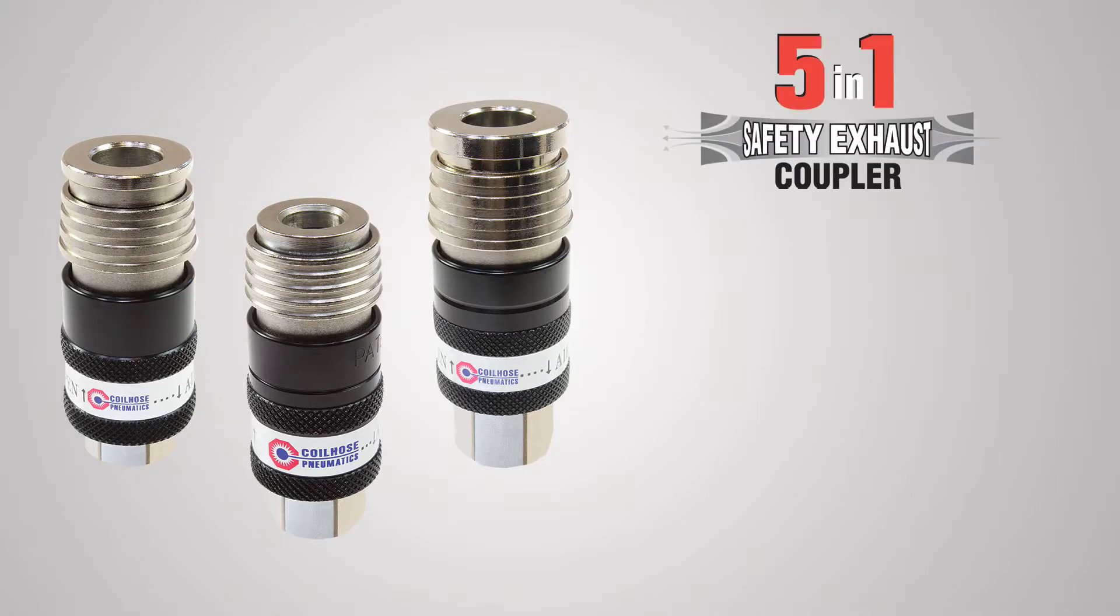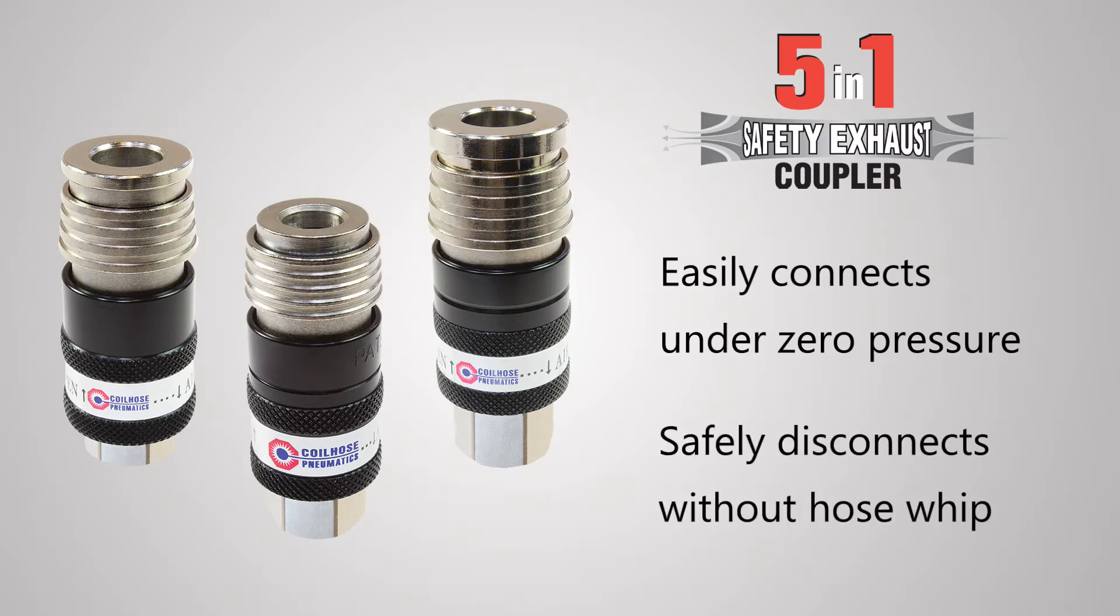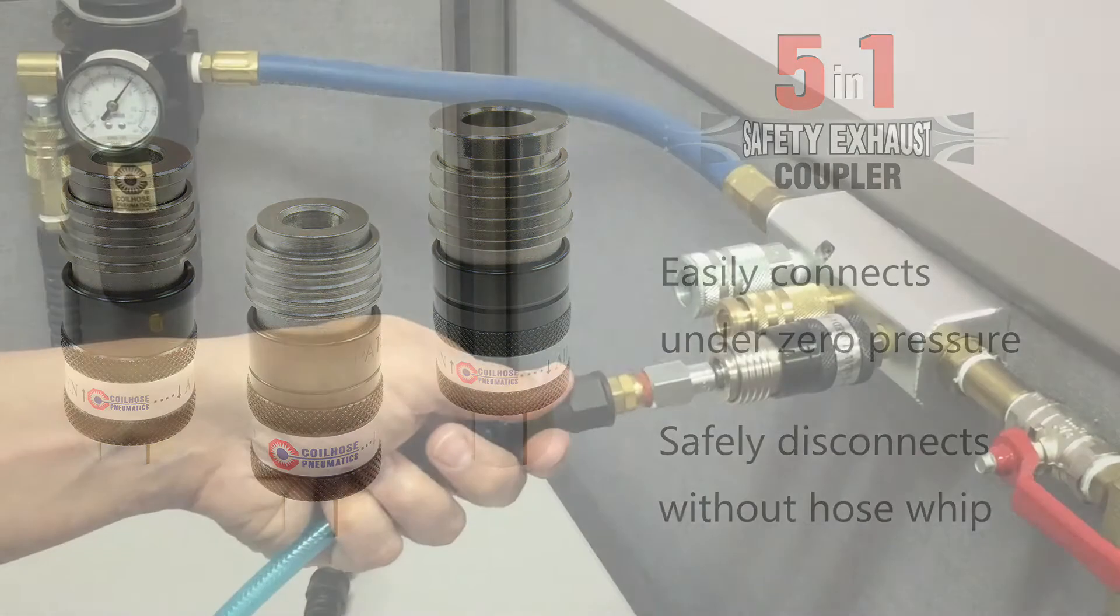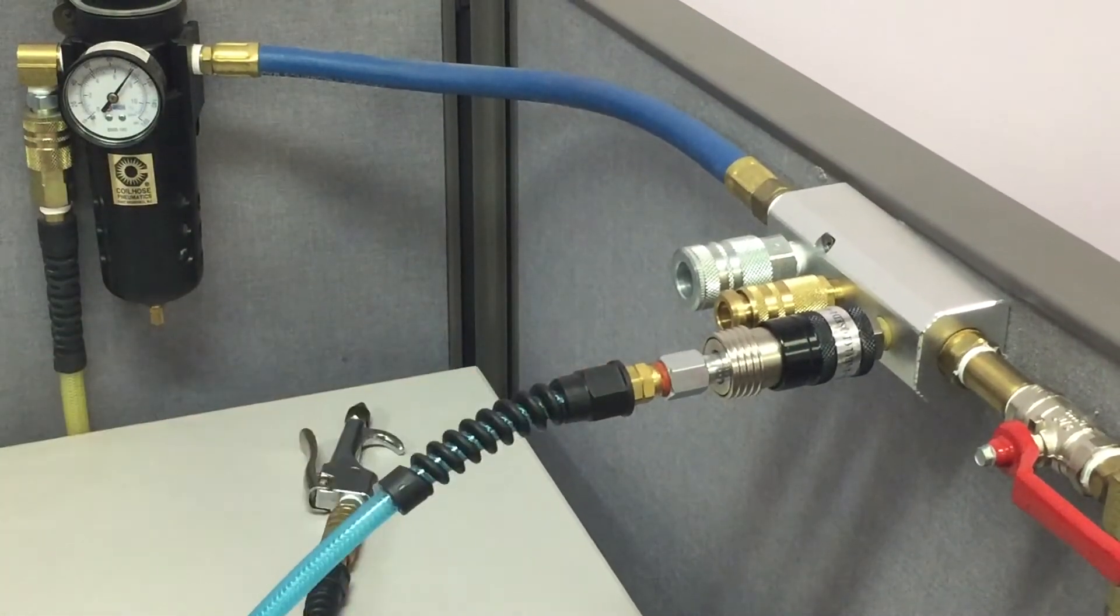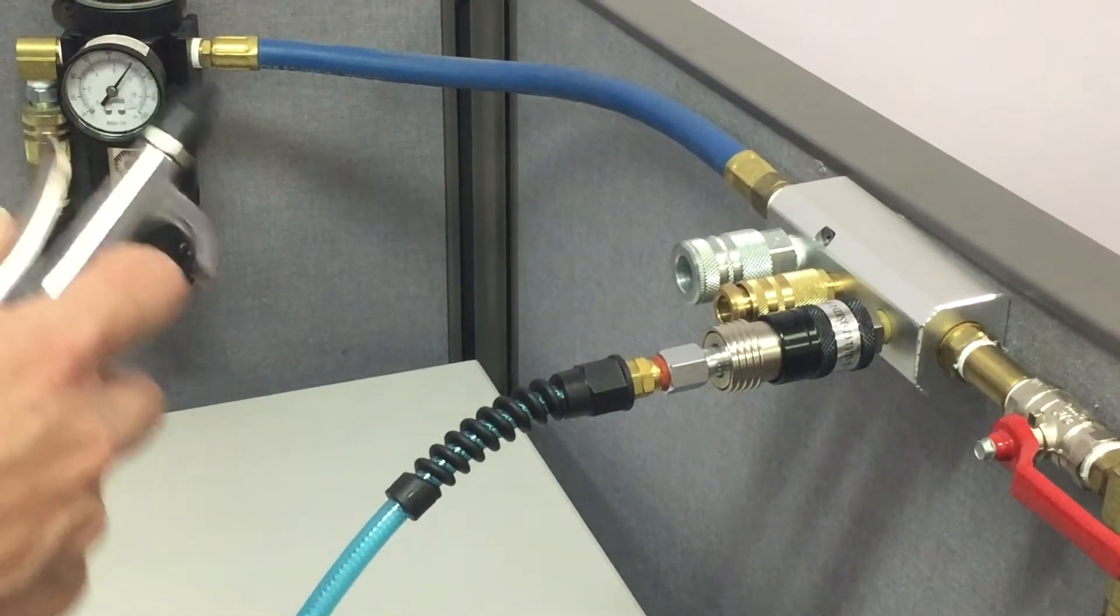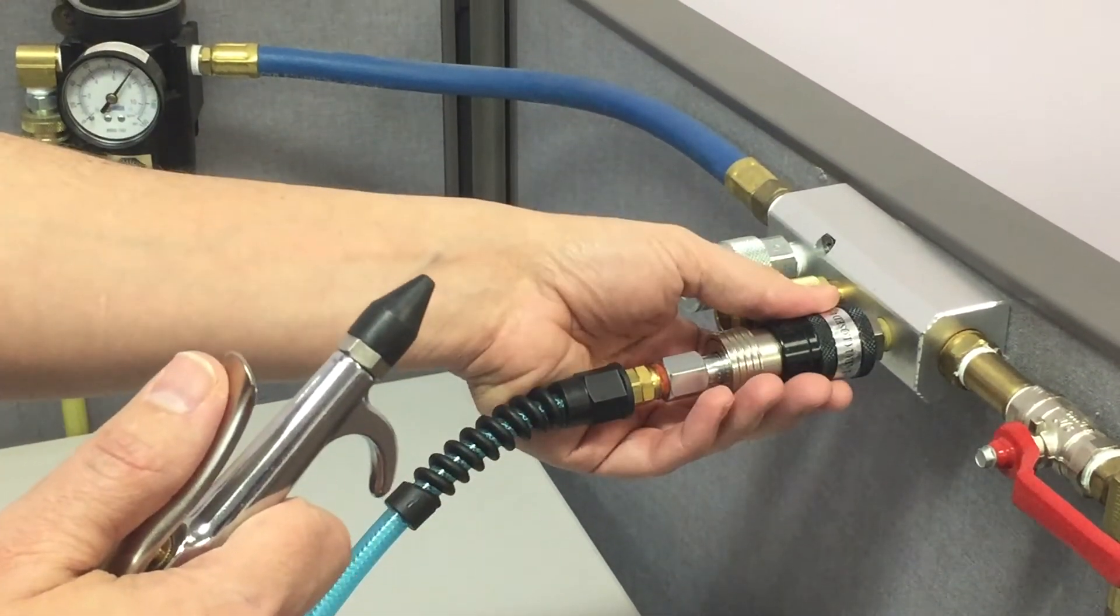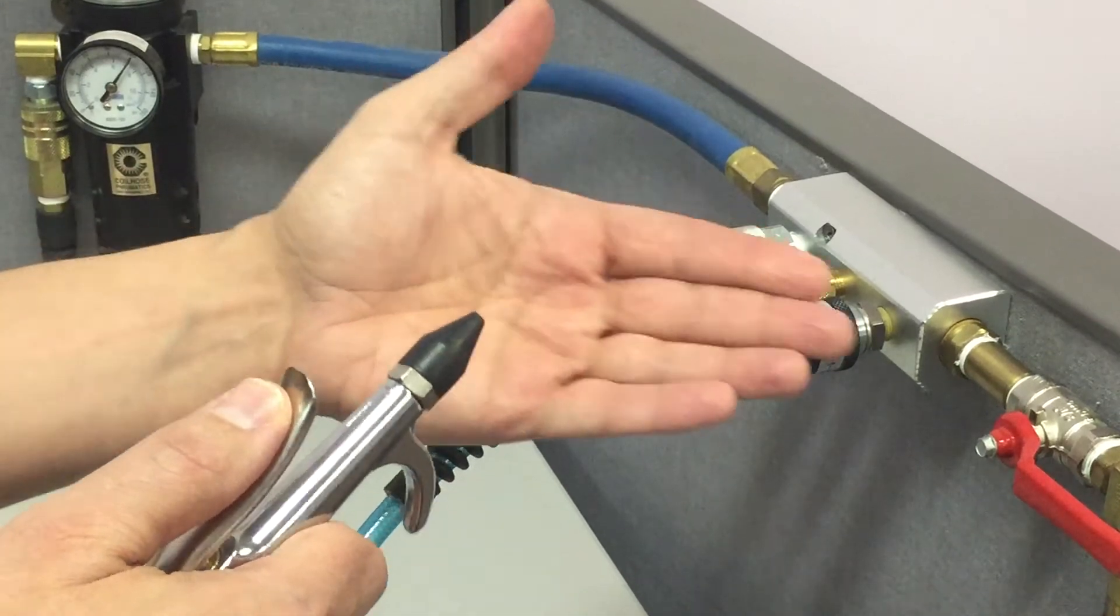The Coil Hose Pneumatics 5-in-1 safety exhaust coupler easily connects under zero pressure and safely disconnects without hose whip. To connect, the plug is easily inserted into the coupler under zero pressure, and the black sleeve is pulled down to start airflow.